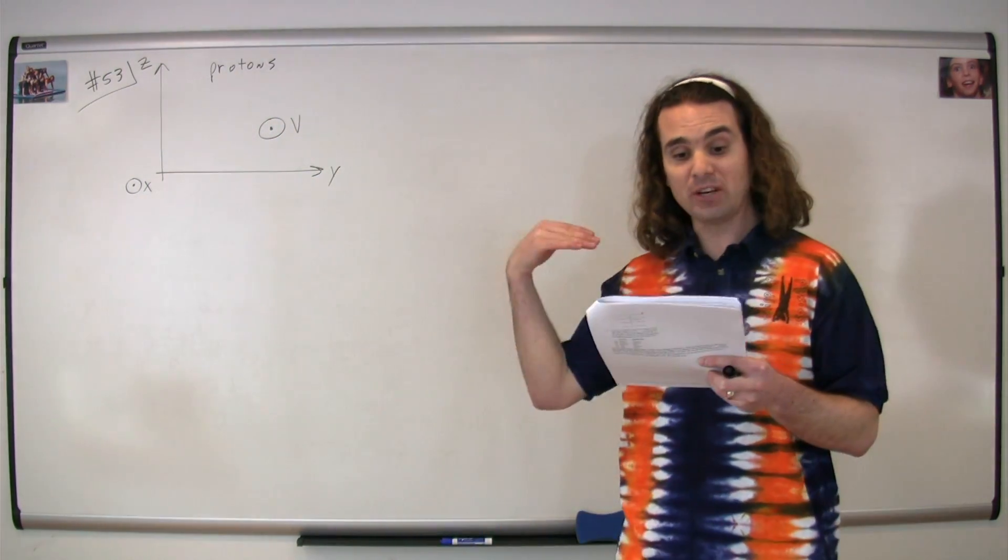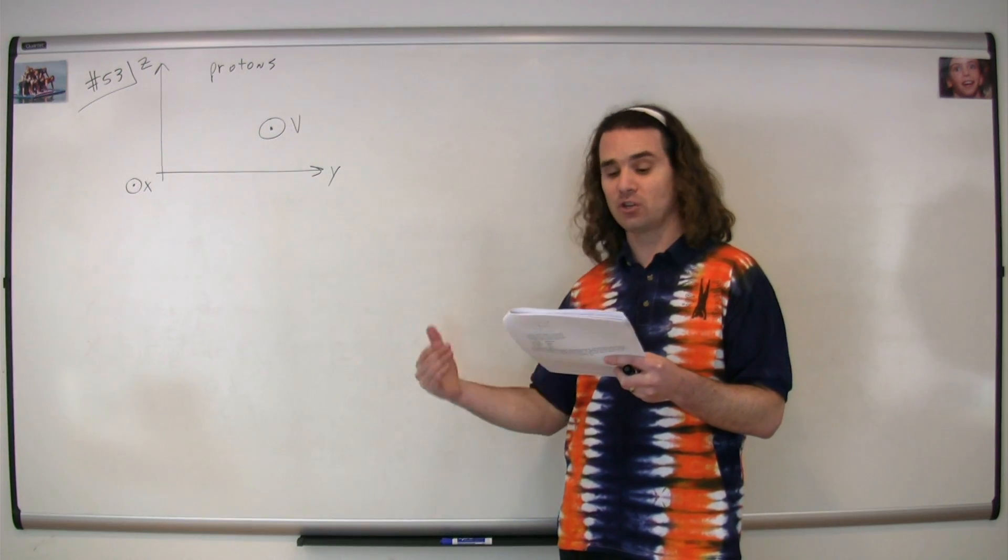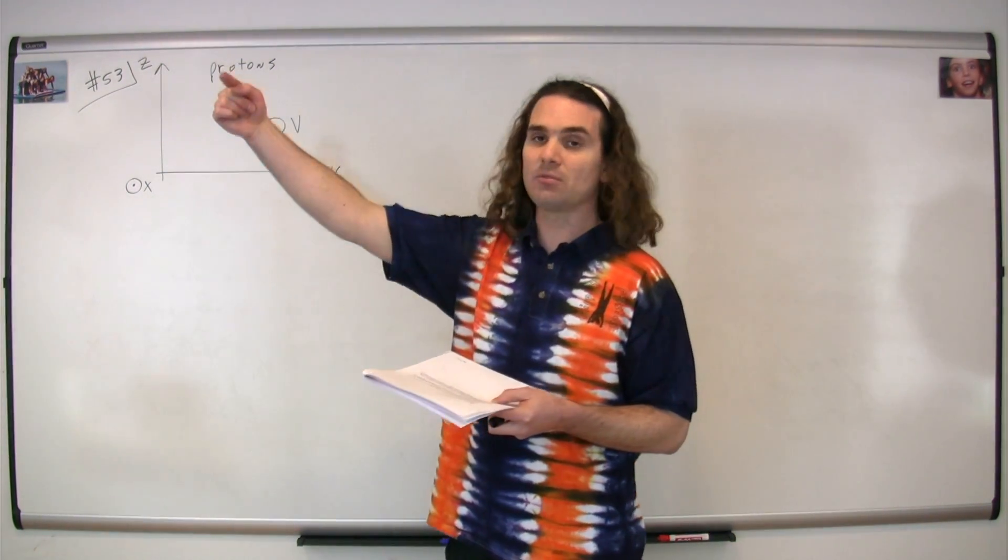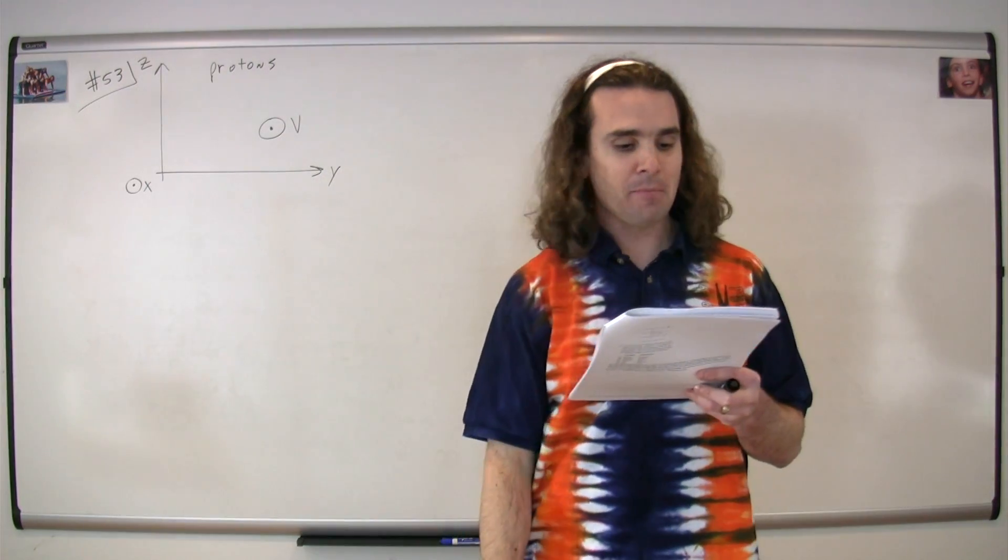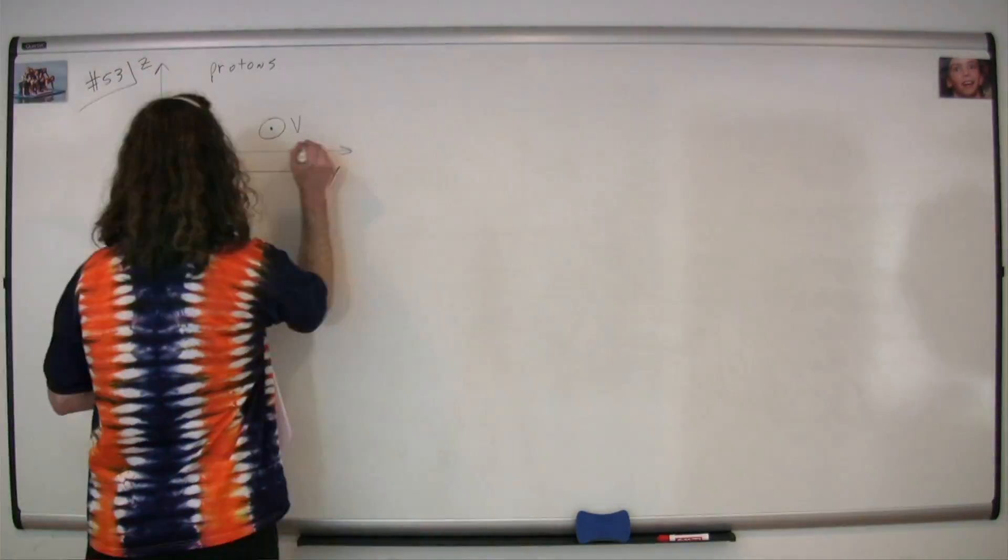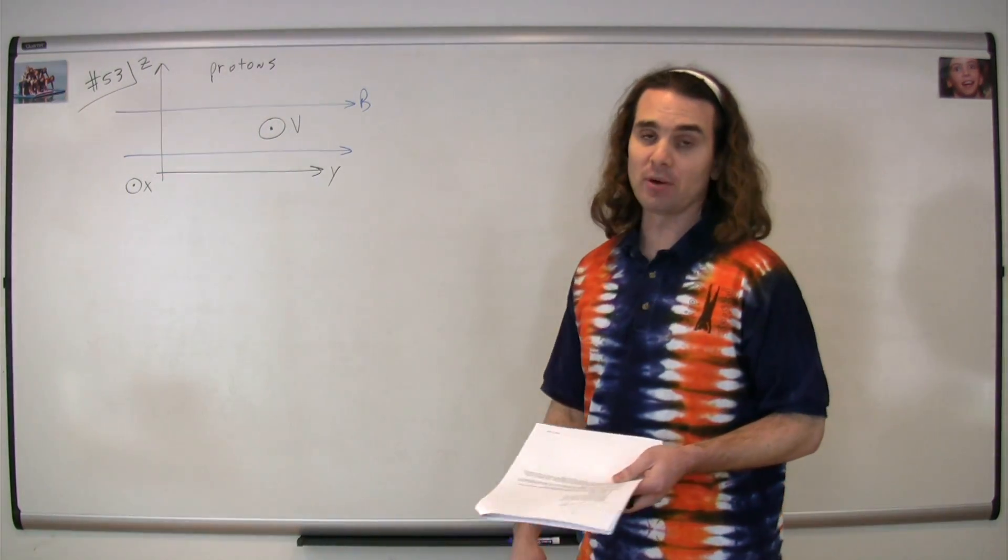So there is a region of crossed electric and magnetic fields balanced for zero deflection of the beam. In other words, the protons are moving straight at you at a constant velocity. If the magnetic field is pointed in the positive y direction, in what direction must the electric field be pointed?